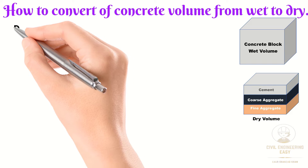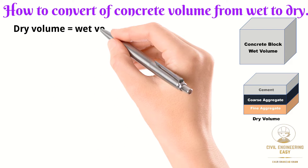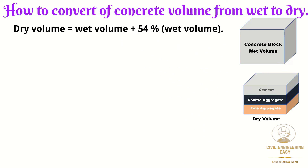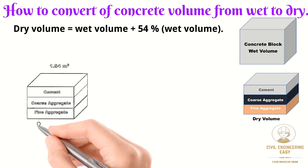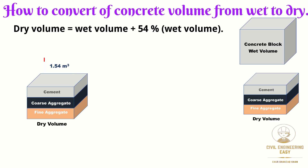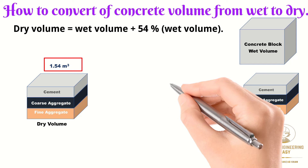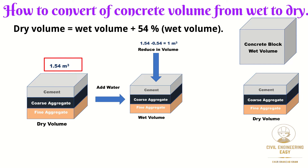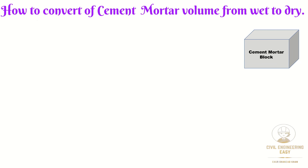The dry volume of concrete is equal to the wet volume of concrete plus 54% of the wet volume. To explain briefly: if we have 1.54 cubic meters of dry volume of concrete, when we add water to this dry mix the volume will reduce by about 54%. That is why we need 1.54 cubic meters of dry mix to get 1 cubic meter of wet volume.